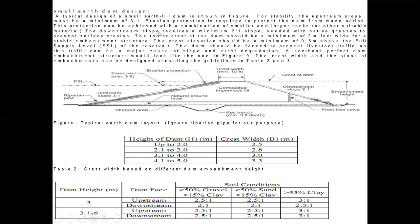This is a typical dam layout. For stability, the upstream slope must be a minimum of 3:1. Erosion protection is required to protect the dam from wave action; this can be achieved with a combination of smaller and larger rocks or other suitable materials. The downstream slope requires a minimum 2:1 slope, seeded with native grasses to prevent surface erosion. The top or crest of the dam should be a minimum of 2 meters wide for a stable embankment structure. The crest elevation should be a minimum of 0.5 meters above the full supply level. The dam should be fenced to prevent livestock traffic, which can be a major cause of slope and crest degradation.